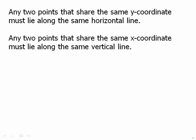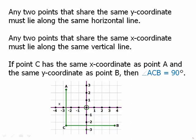Similarly, any two points that share the same x-coordinate must lie along the same vertical line. If C has the same x-coordinate as point A and the same y-coordinate as point B, then it must be true that angle ACB is a right angle, a 90-degree angle, because it's the angle between a horizontal line and a vertical line.